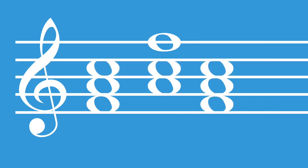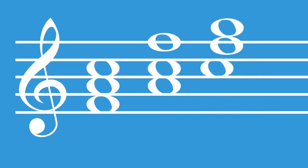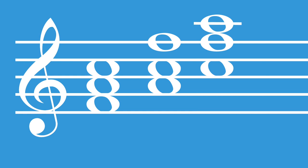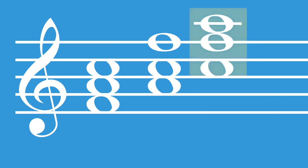We could also have the fifth as the lowest note in the triad. In that case, the fifth stays where it is, and the root and the third move above it. We're using the same notes, just above the fifth instead of below it. Having that different bass note gives the chord a different character.